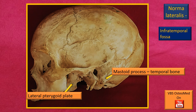In the infratemporal fossa, the plate of bone that virtually shows itself as the floor is the lateral pterygoid plate. Medial to that is the medial pterygoid plate, not very clearly visible in a strict lateral view, but I will show you another view where the norma basalis is included. Behind the external acoustic meatus, the mastoid process of the temporal bone is visible, as shown by the flashing arrow.